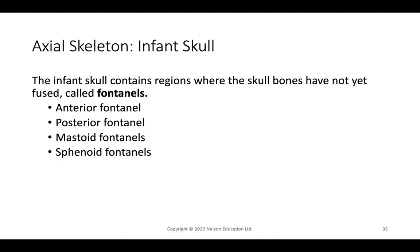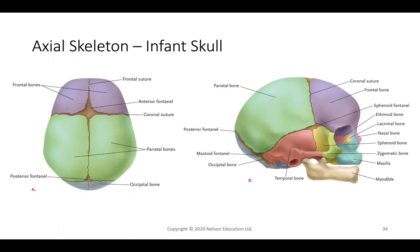The infant skull has unfused regions called fontanelles, or soft spots, in several areas: anterior, posterior, mastoid, and sphenoid fontanelles. These take several months to fuse. Their purpose is to allow the skull to compress during passage through the vaginal canal — the bones may overlap or push together to reduce the head size for delivery.